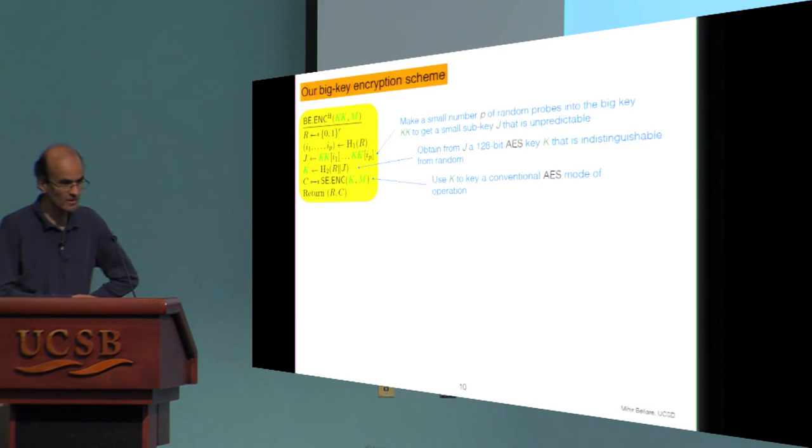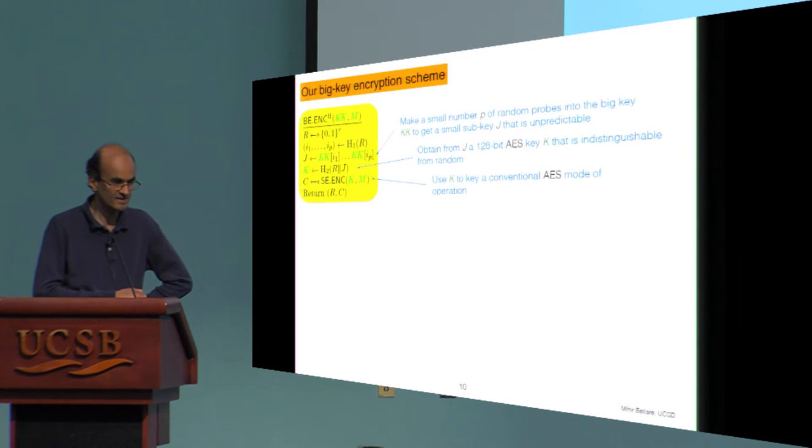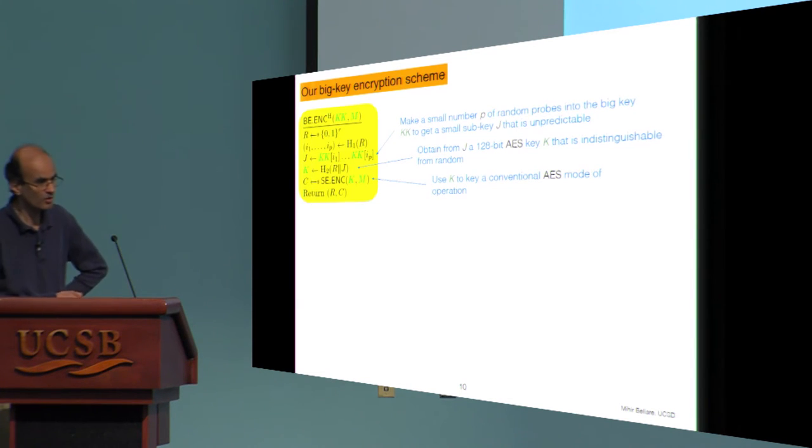Okay, so our scheme is quite simply described and it looks like this. We have our encryption function here, access to the random oracle. It's given the big key KK to which it must make a small number of probes and the message M. The first thing it does is pick a random selector, say a 256-bit string, something like that. And now it applies a random oracle to that selector to get probes.